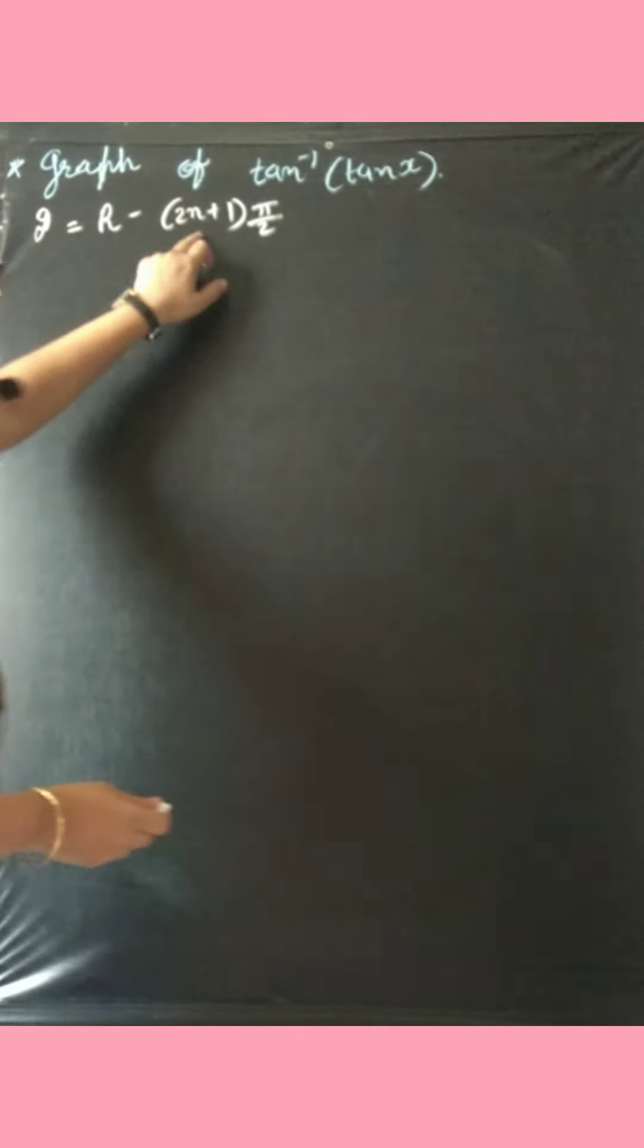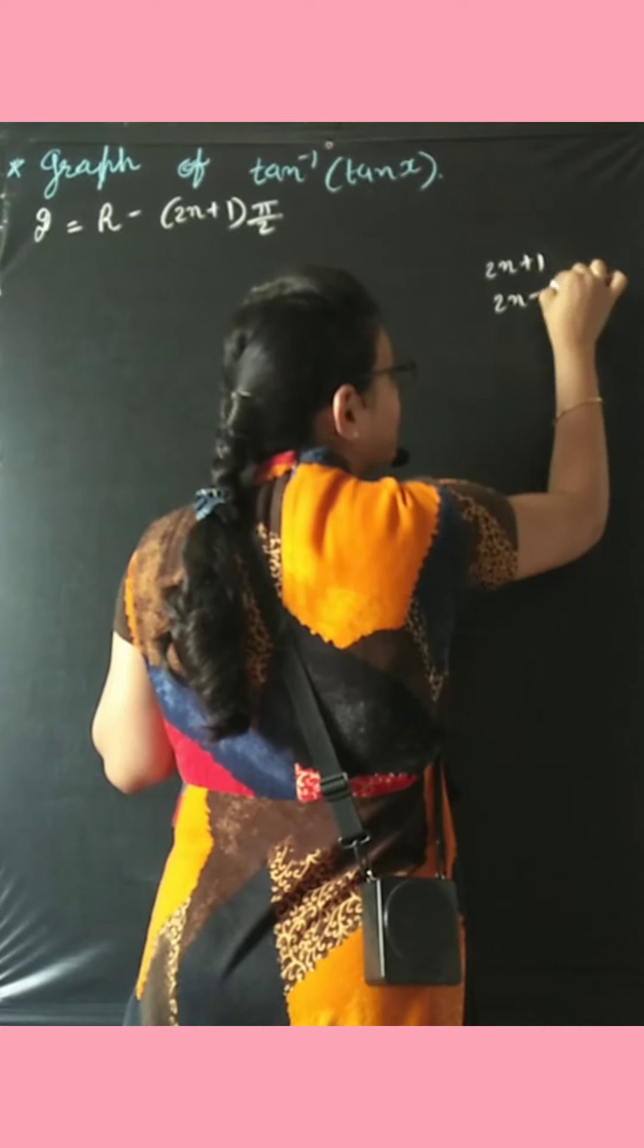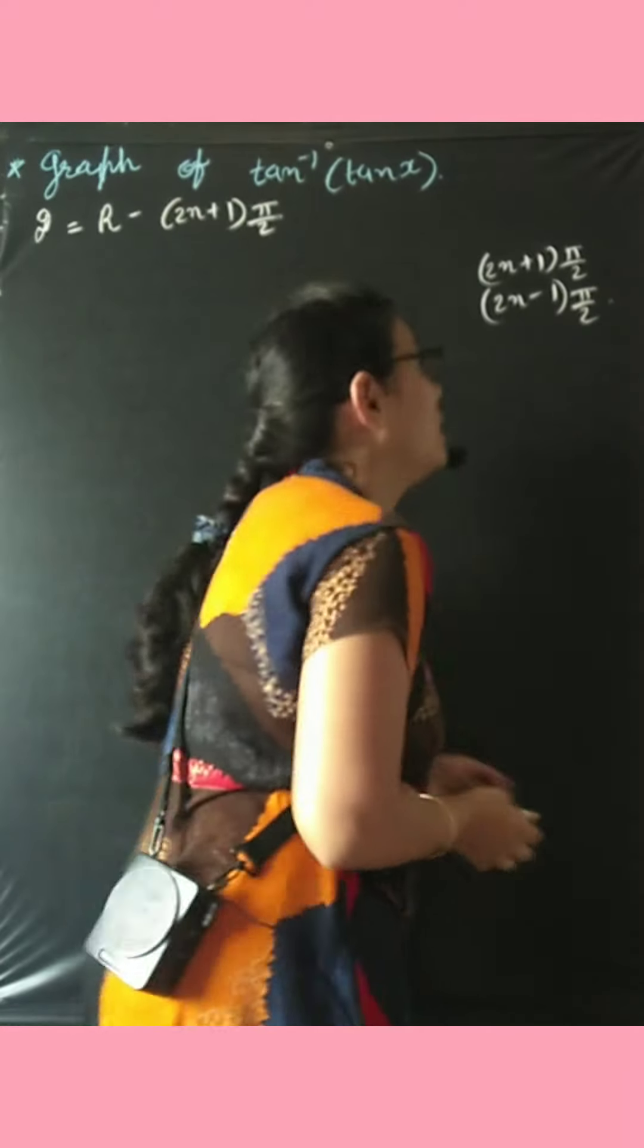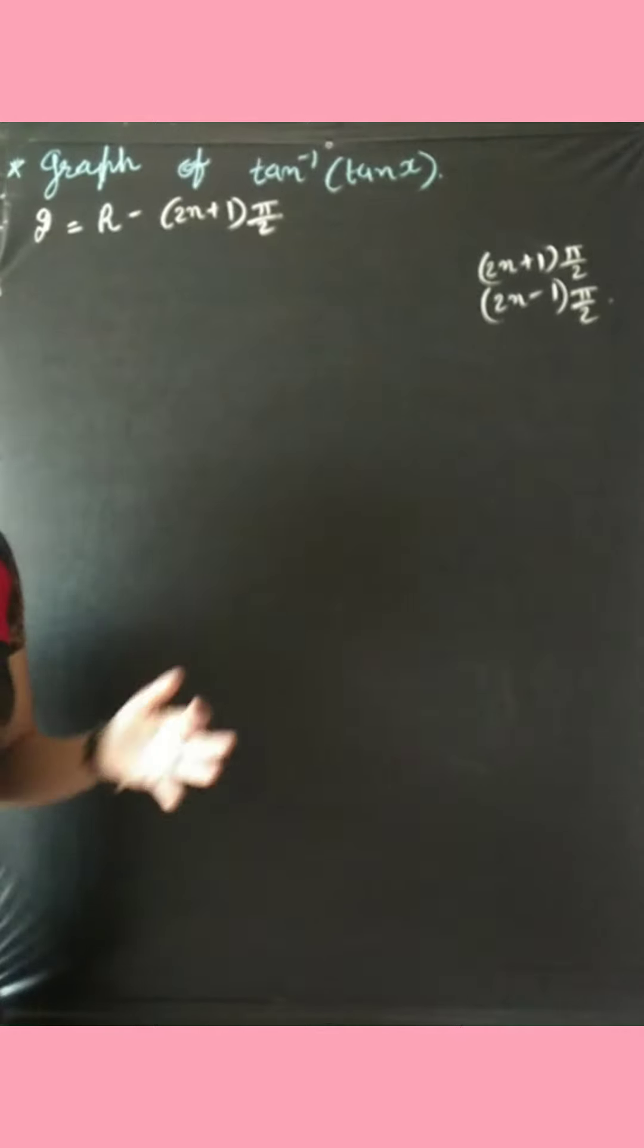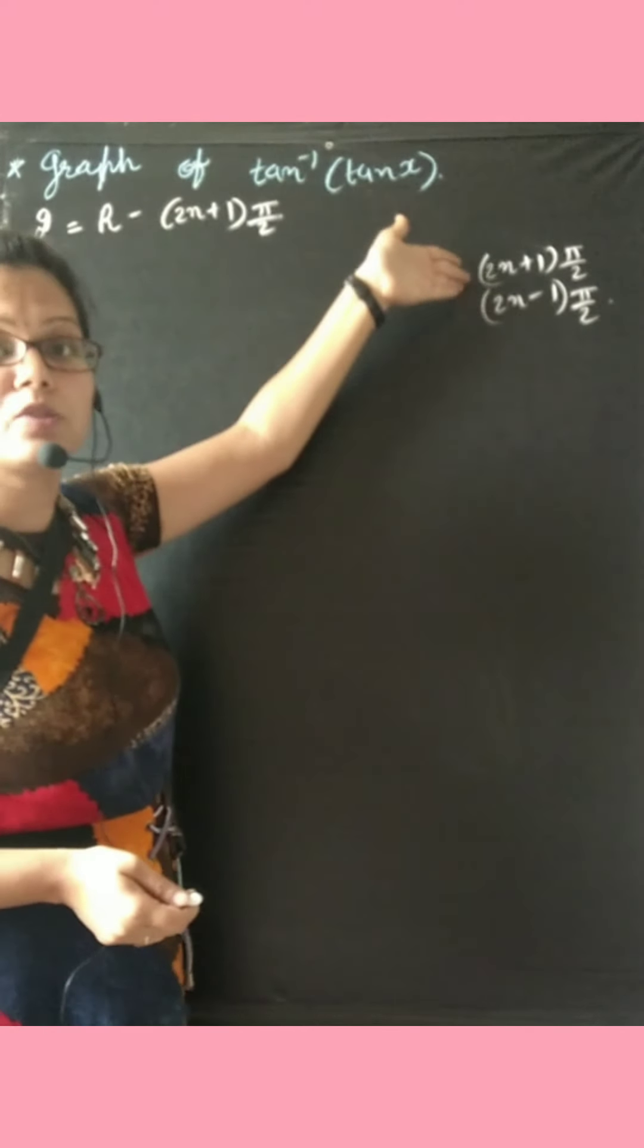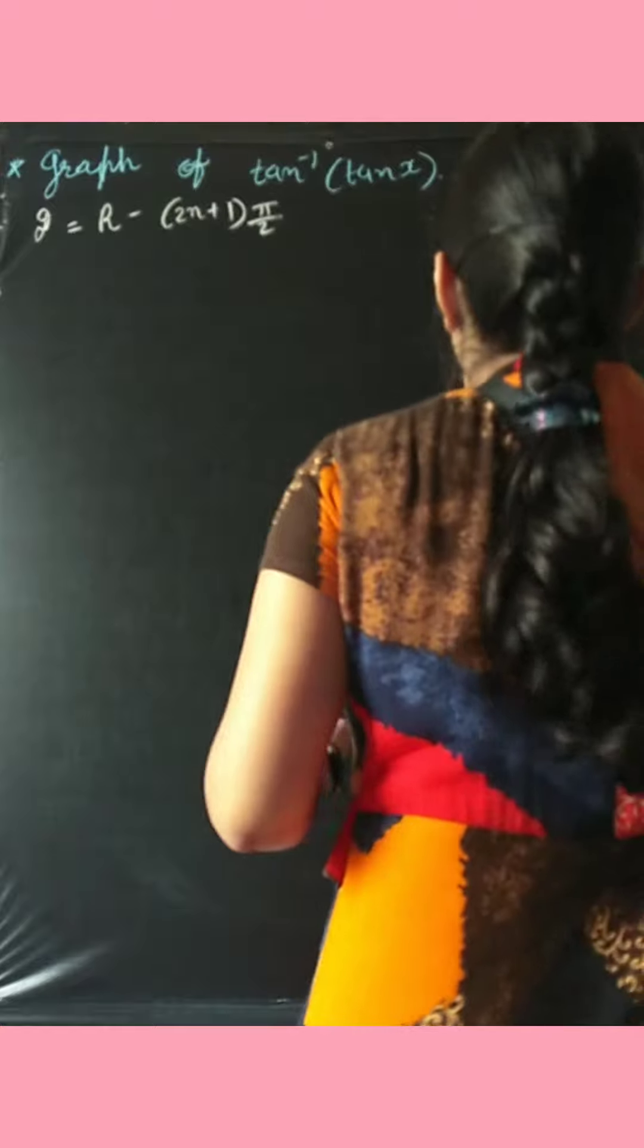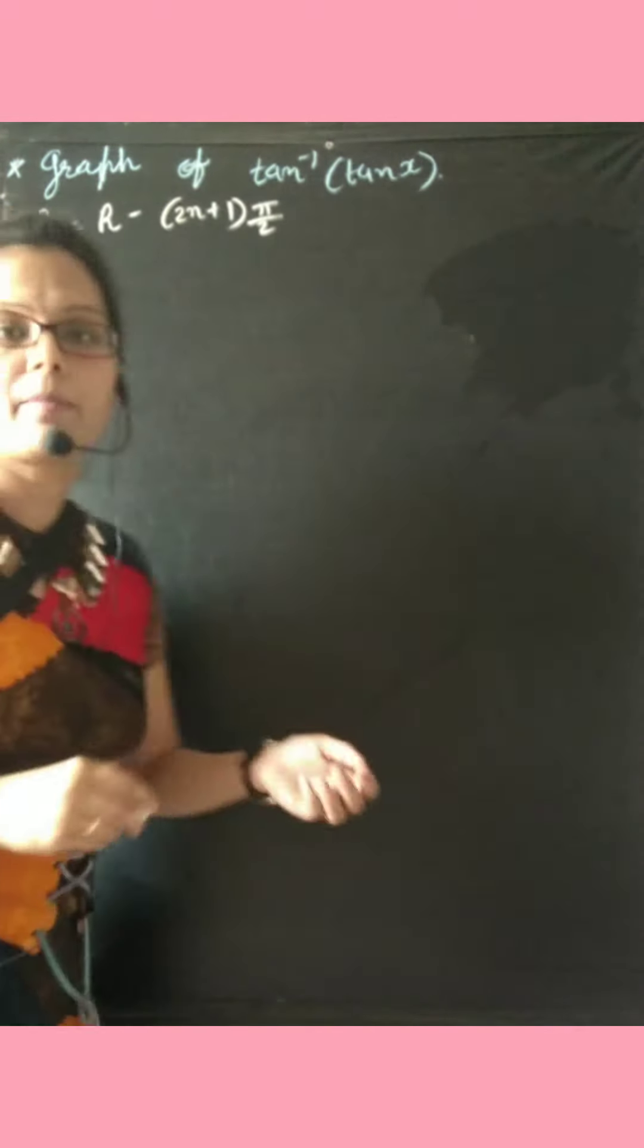If you want to see why these two are equal: 2n plus 1 or 2n minus 1 times pi by 2, the sets relate to this. These two are equal. You can see my session on set theory for 11th standard. I made a whole video on why these two sets are equal. For now, just remove this. Domain is equal to R minus 2n plus 1 into pi by 2.